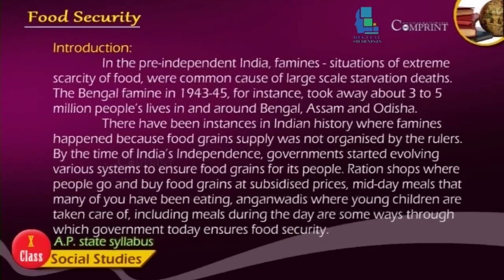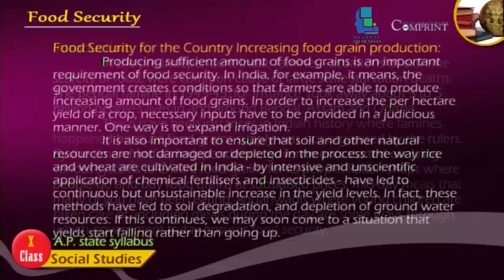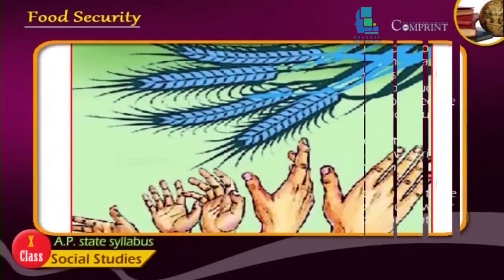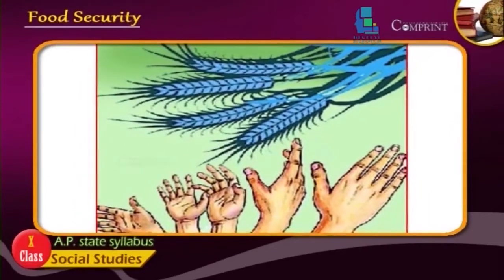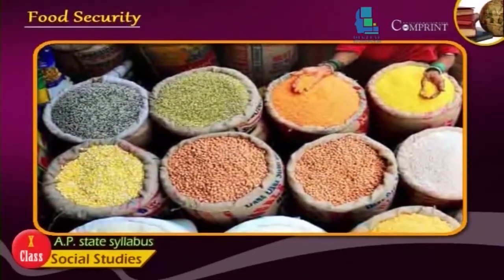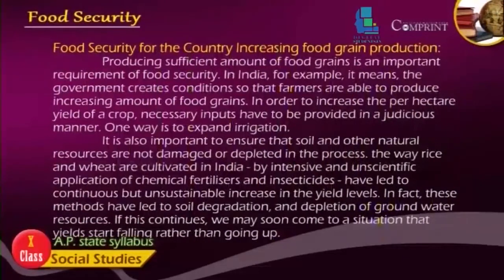Increasing food grain production — producing a sufficient amount of food grains — is an important requirement of food security in India. The government creates conditions so that farmers are able to produce increasing amounts of food grain. In order to increase the per hectare yield of a crop, necessary inputs have to be provided in a judicious manner; one way is to expand irrigation.